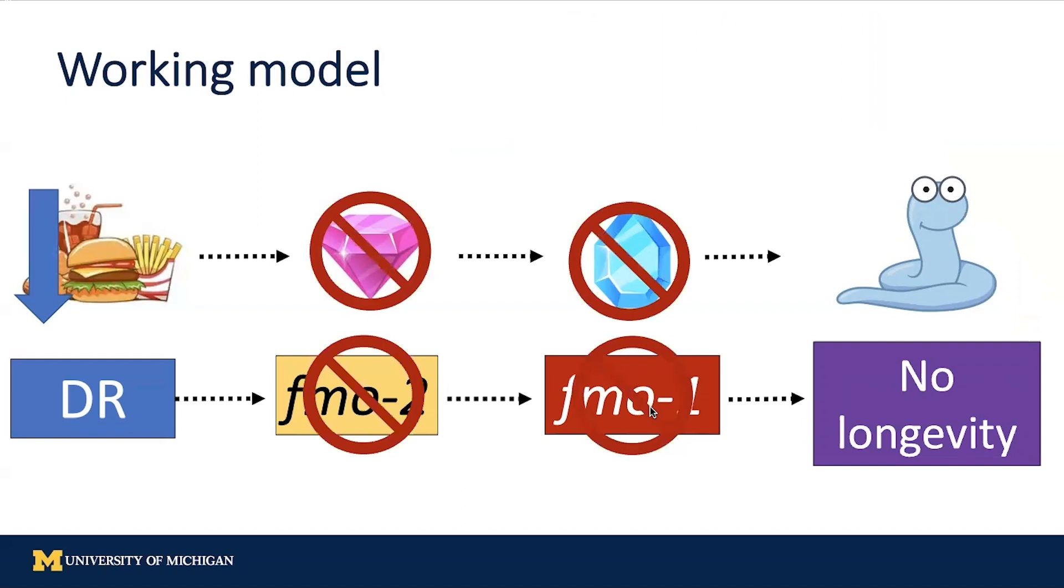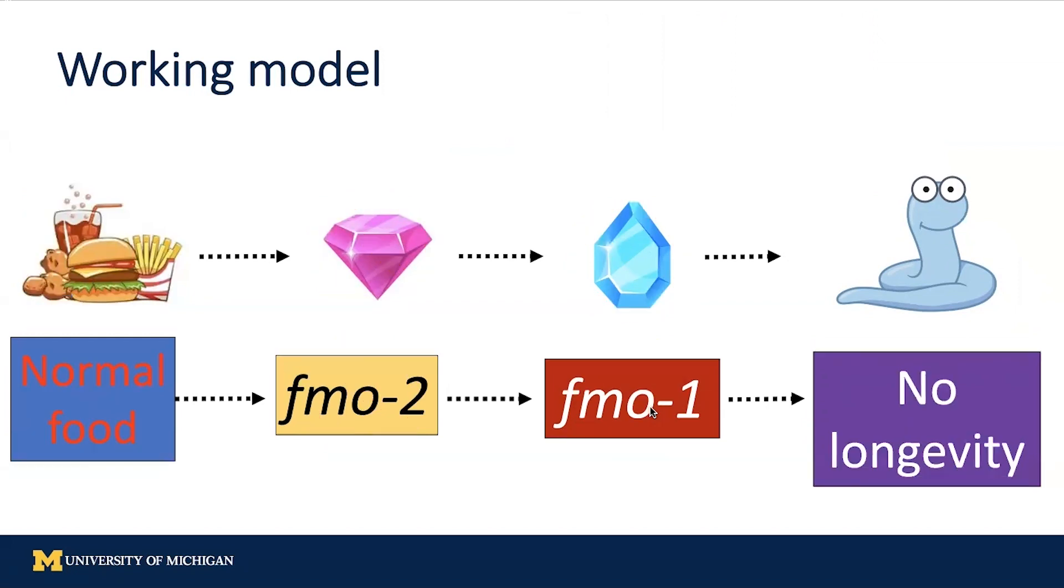Lastly, if you change the most upstream factor, the food restriction into normal amount of food, you won't get longevity either.